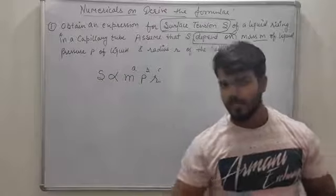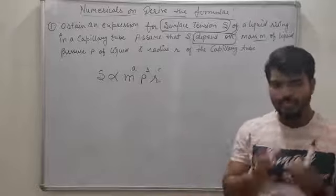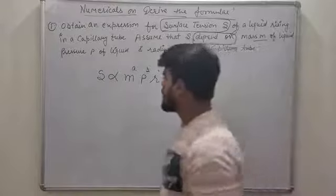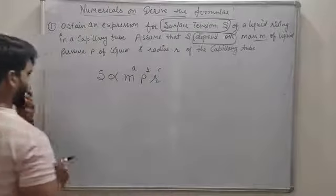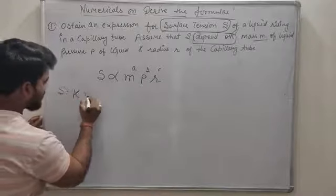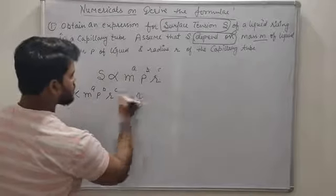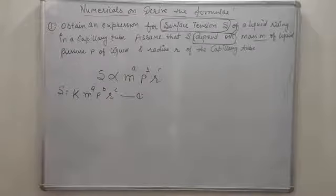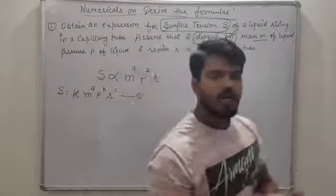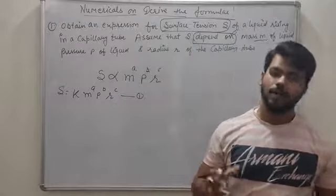Powers A, B, C हैं जो हमें find out करनी हैं। आपको यह numerical ध्यान से समझना है — सारे numerical एक जैसे हैं। Proportion sign हटाके constant K apply करो — यह first equation। अब कुछ भी नहीं करना — put all the dimensional formulas of given physical quantities and compare them.